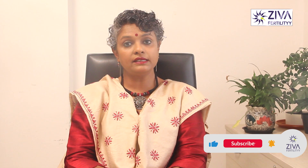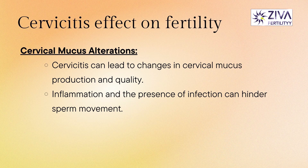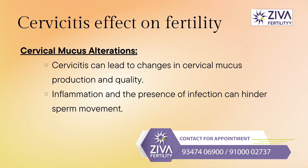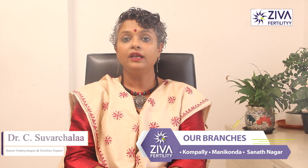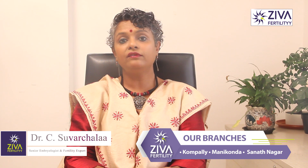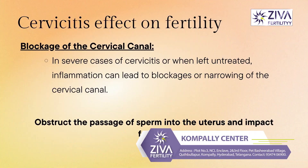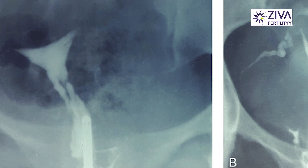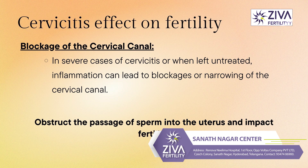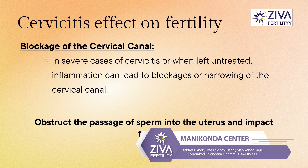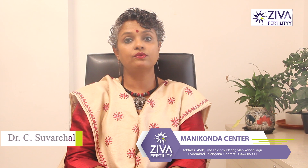The effect on fertility is that cervicitis can lead to changes in cervical mucus production and quality. Healthy cervical mucus is essential for sperm transport through the cervix and into the uterus, and inflammation along with the presence of infection can hinder sperm movement. In severe or untreated cases, cervicitis can lead to blockages or narrowing of the cervical canal, obstructing the passage of sperm into the uterus and impacting fertility.